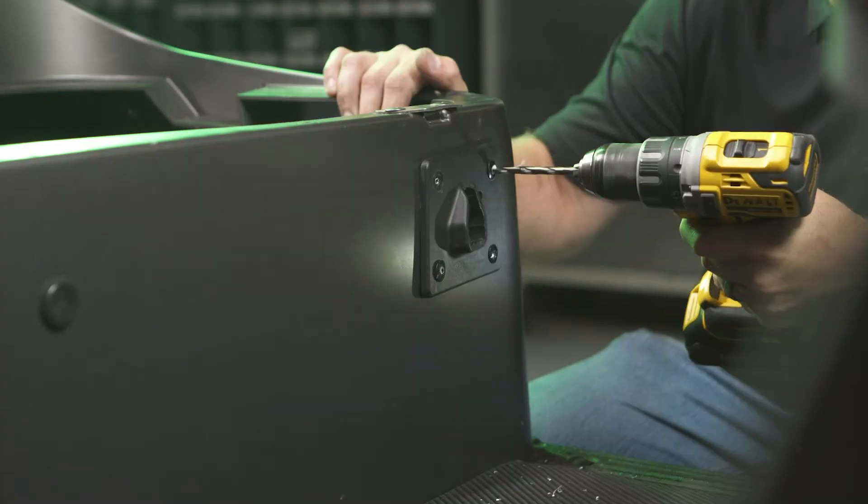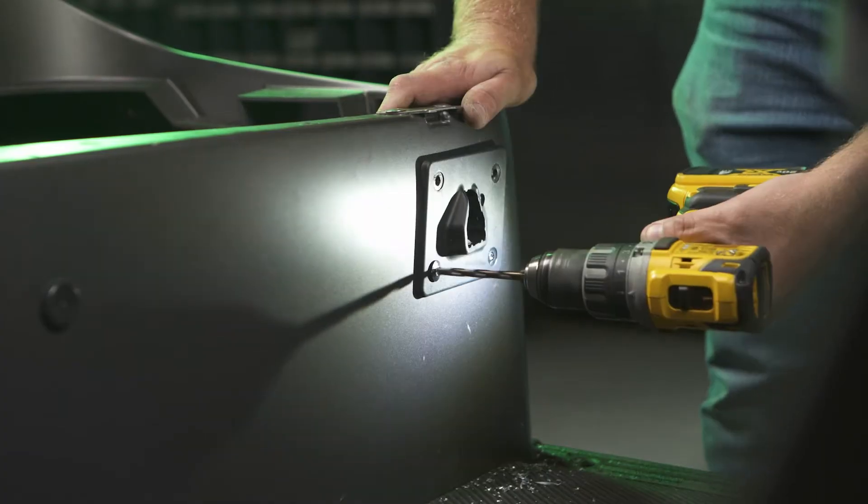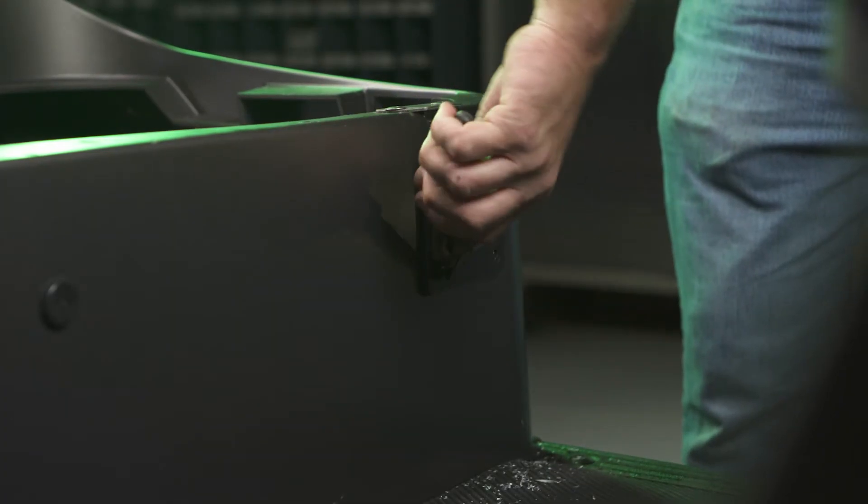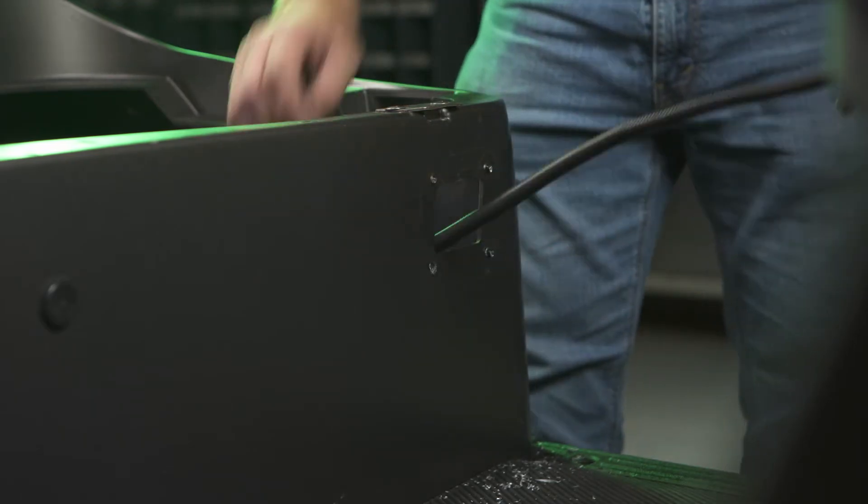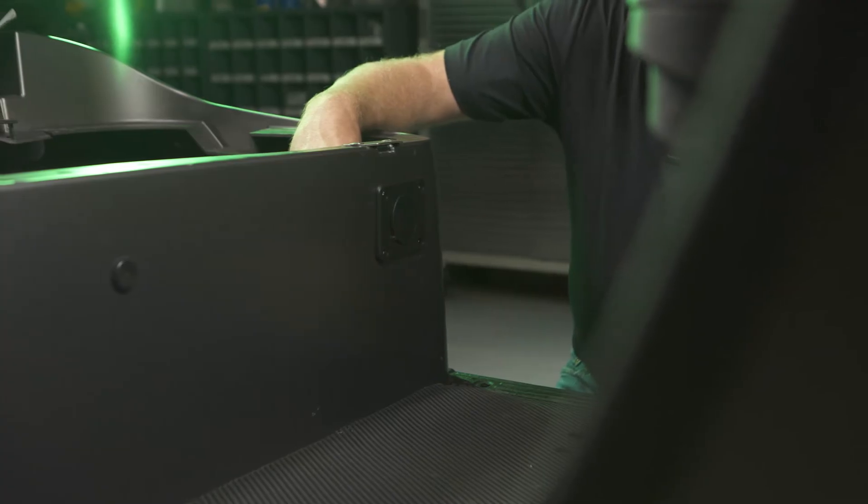Remove the factory charge port by drilling out the four rivets holding it in place. Install the eco battery charge port with the provided hardware.